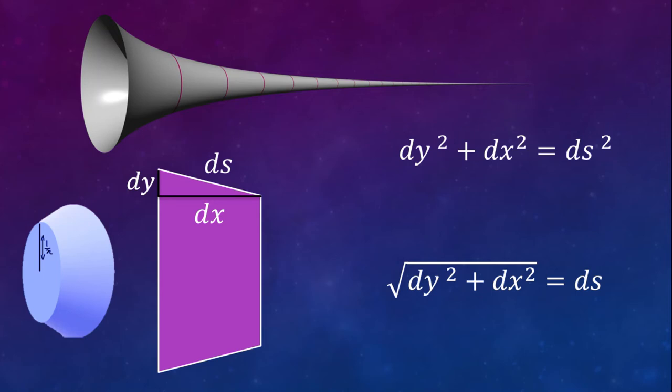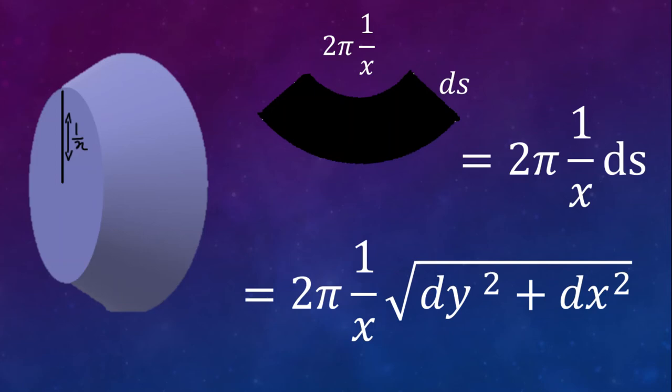And we can work out ds by using the Pythagorean theorem. ds squared equals dx squared plus dy squared. We get the square root on both sides. And we get ds equals the square root of (dx squared plus dy squared). And we get that the surface area of the curved surface of a slice is equal to 2π times 1 over x times the square root of (dx squared plus dy squared).